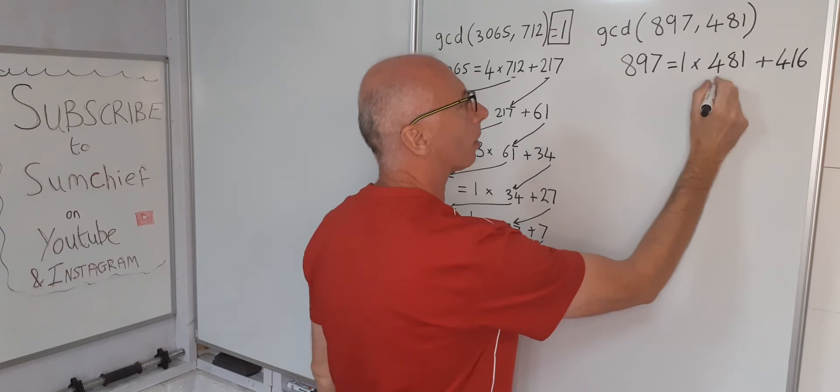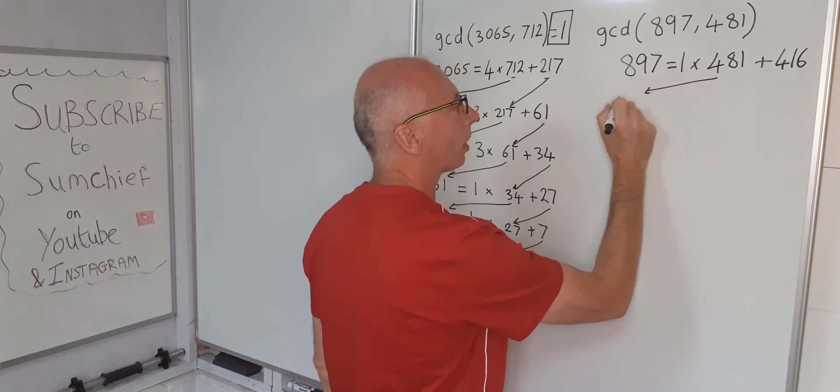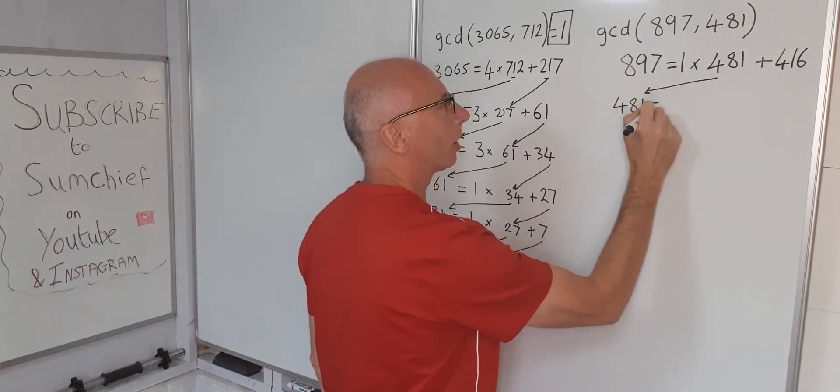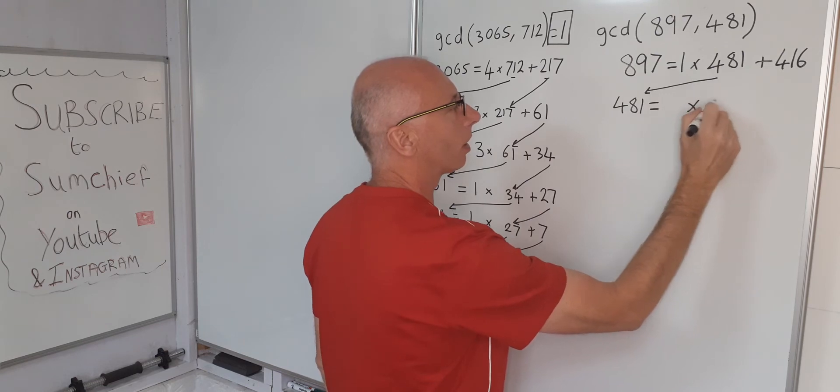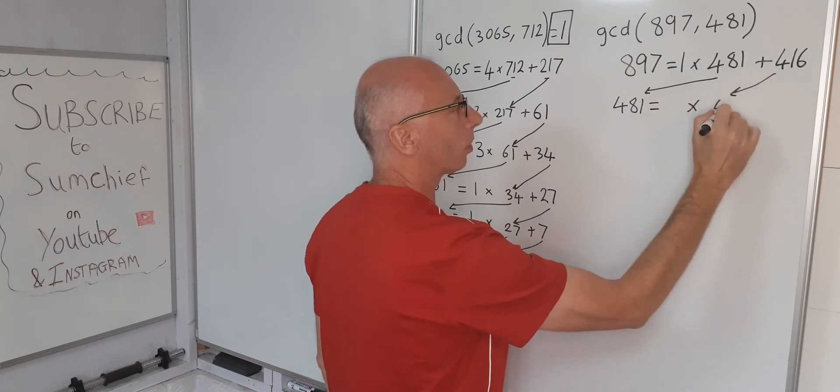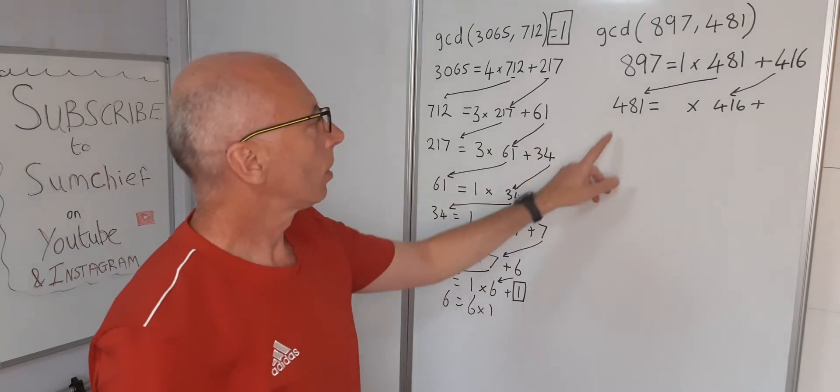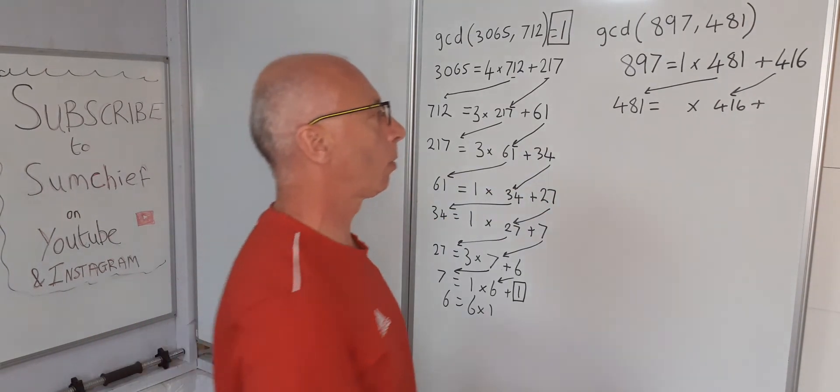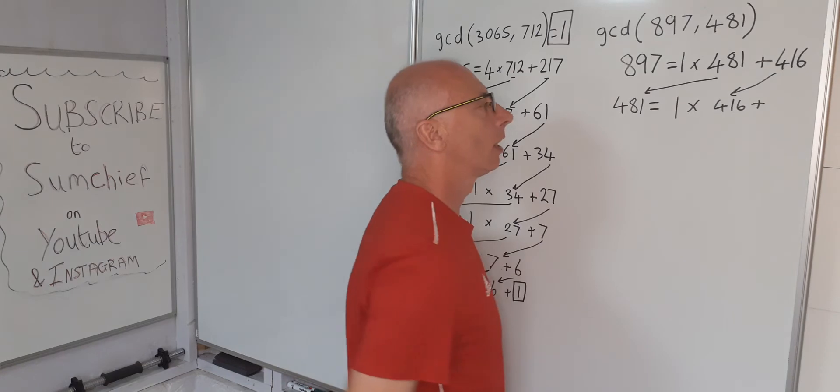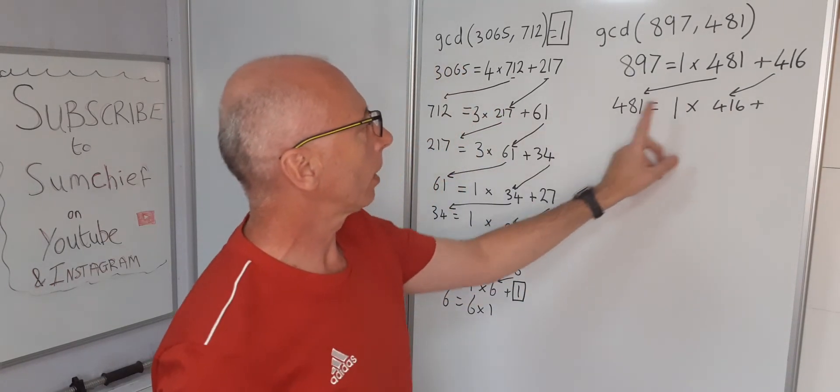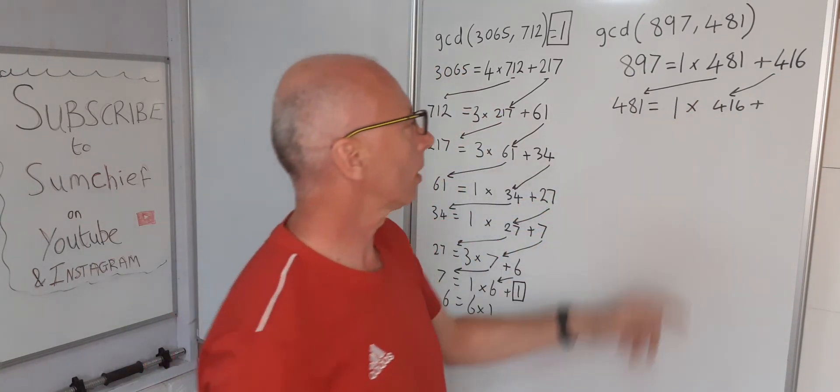Same system as before. Bring the 481 out front. That equals something times the 416 with a remainder. 481, 416, it's just going to be 1 multiplied by. What's the remainder? 481 minus 416 gives us 65.